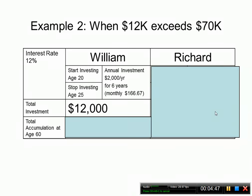Now let's look at another example that will illustrate the timing of financial resources. The previous example looked at different interest rate conditions. Now we're looking at similar use of financial resources, but we focus on the timing. This example involves two people: William and Richard.